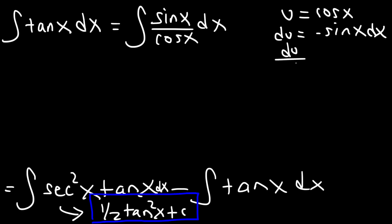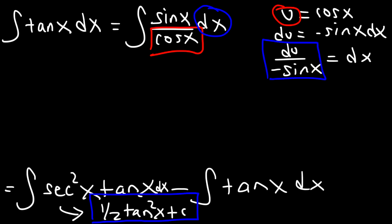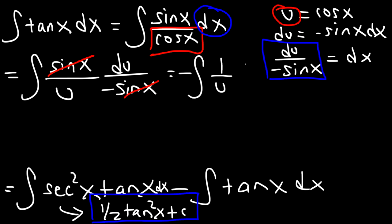Solving for dx, that's going to be du over negative sine. So let's replace cosine x with the u variable. And let's replace dx with du over negative sine. So this is going to be the integral of sine x divided by u. And dx is du over negative sine x. So we could cancel sine. And I'm going to move the negative sign to the front. So we have negative integral 1 over u du.